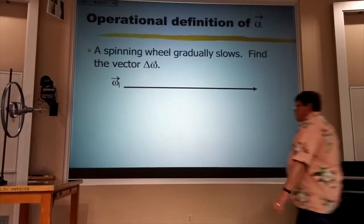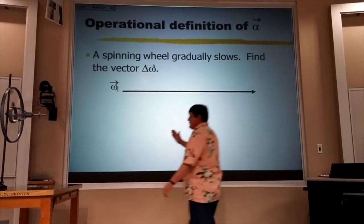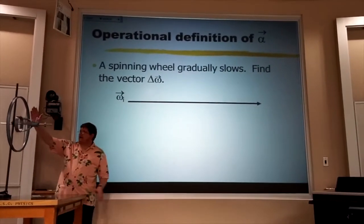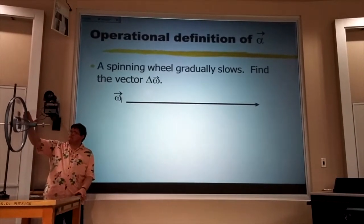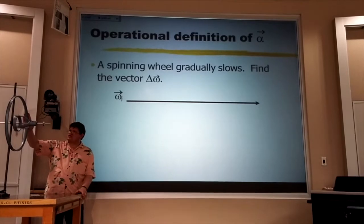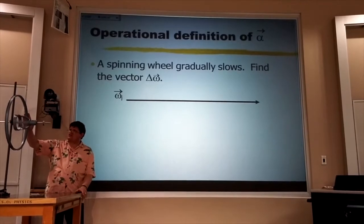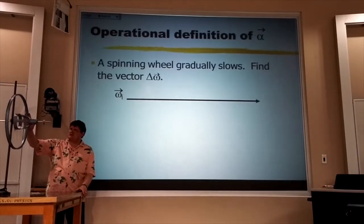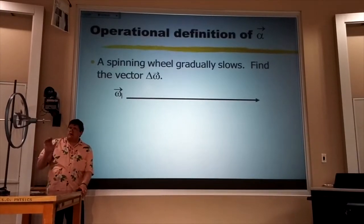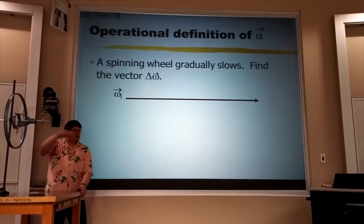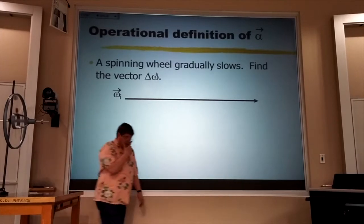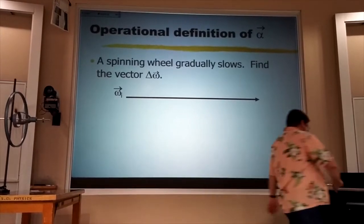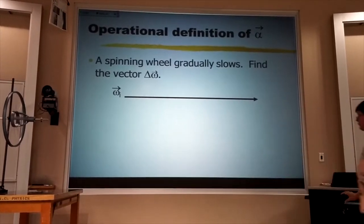Now, if I put my hand on the side of that and slow it down... the omega vector is still pointing towards the open door, but now it's shorter.